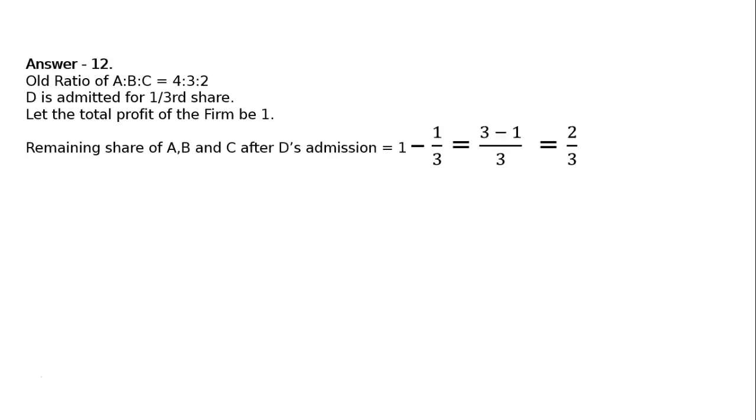Remaining share of A, B and C after D's admission is equal to 1 minus 1 upon 3. That is equal to, LCM 3, 3 minus 1 is equal to 2 upon 3.